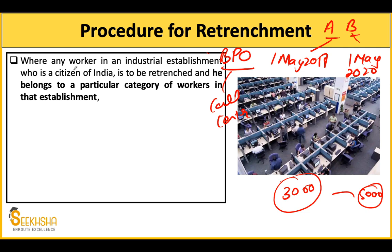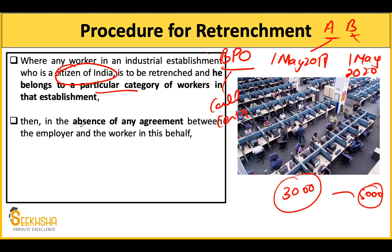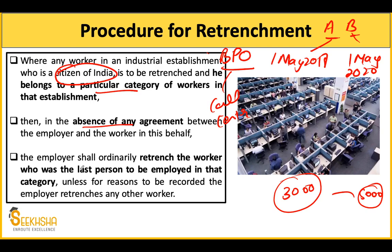Where any worker in an industrial establishment who is a citizen of India — in the absence of any agreement between the employer and worker — the employer shall retrench the last person to be employed in that category. For example, there were 100 workers appointed, and they have noticed that those 100 workers will be first to be retrenched because this is the last organization rule.